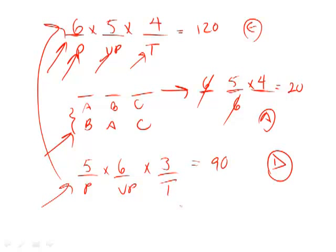We used permutations here because the roles matter — a president is different from a vice president is different from a treasurer. When you have distinct positions, arrangement A-B-C is different from B-A-C, so each arrangement counts separately and increases the total. That's why we put five, six, and three in the dashes and don't divide by anything. Once you understand the dashes and know whether to use combinations or permutations, that's all that really matters. The answer is 90, choice D.